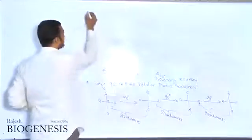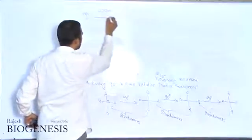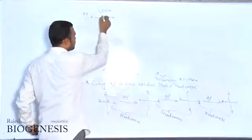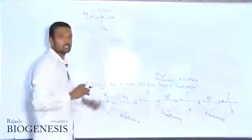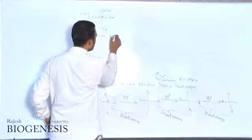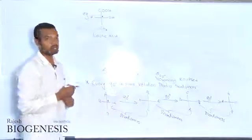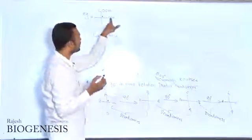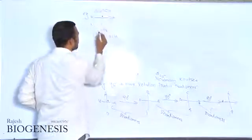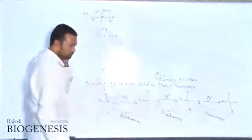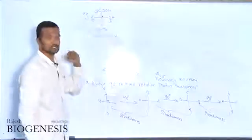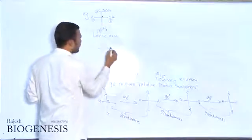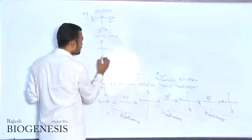Take lactic acid as an example. This is lactic acid with groups: OH, H, CH₃, and COOH. This central atom has four different atoms or groups, which is why this is called a chiral center in lactic acid. To determine the configuration using CIP rules: oxygen has the highest atomic number, so COOH/OH has first priority, then second, third, and fourth priority are assigned accordingly.